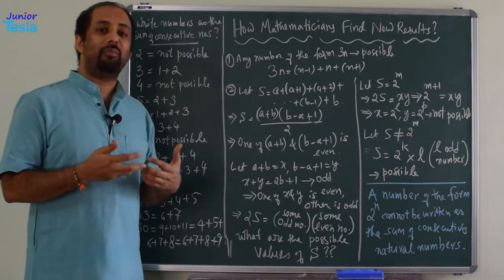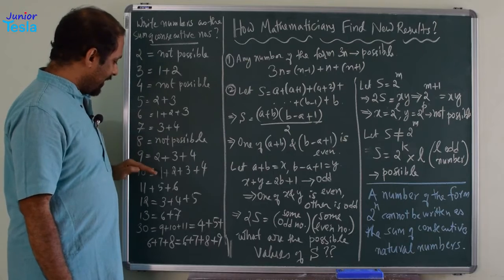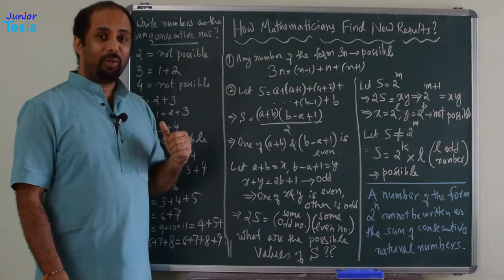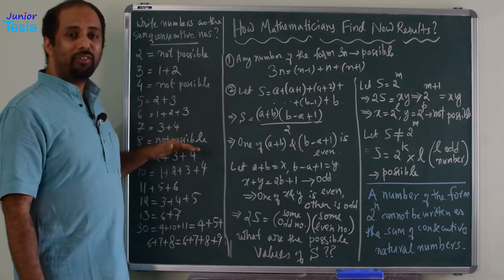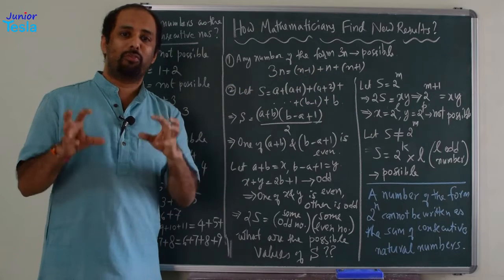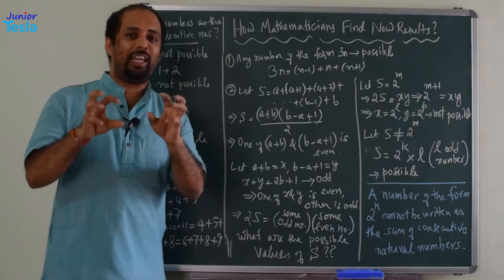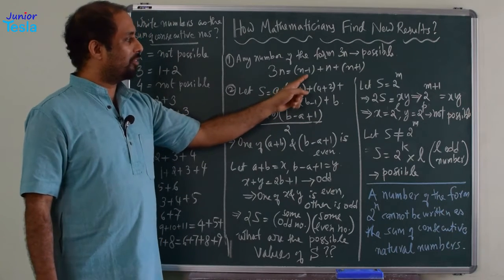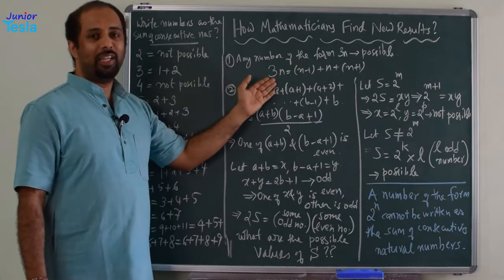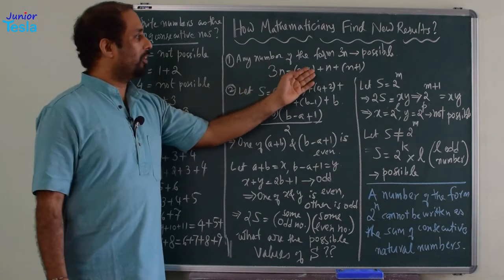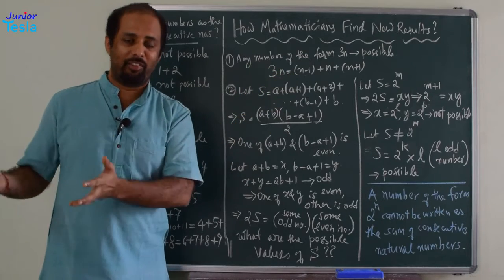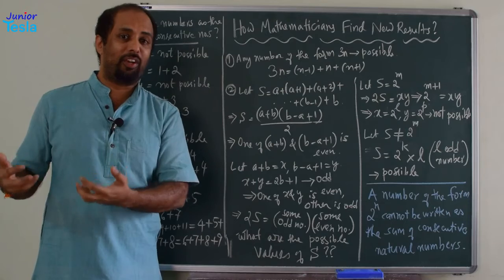Then, you can also find that whenever the number is a multiple of 3 — for example, 6, 9, 12, 15, 18, etc. — it is always possible to write it as sum of 3 consecutive natural numbers. Why? Because the general term of any multiple of 3 is 3n, and 3n is equal to (n minus 1) plus n plus (n plus 1). So it is always possible to split a multiple of 3 as sum of 3 consecutive natural numbers, because the minus 1 and plus 1 cancel, and the sum is always 3n. So if you have 15, which is 3 into 5, it is 4 plus 5 plus 6. Similarly, 18, which is 3 into 6, is 5 plus 6 plus 7.